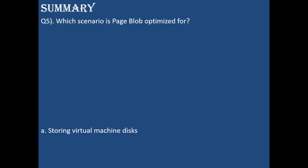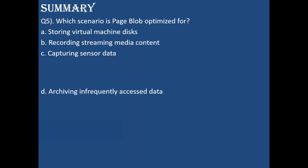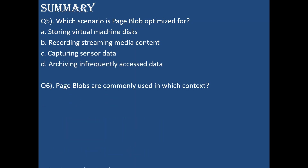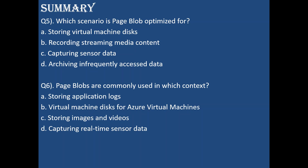Question 5: Which scenario is page blob optimized for? The answer is storing virtual machine disks — that is the ultimate example. Page blobs are optimized for storing virtual machine disks, so option A is correct. Question 6: Page blobs are commonly used in which context? Not for application logs, not for images/videos, not for real-time sensor data — the right answer is virtual machine disks for Azure virtual machines. Answer B is correct.